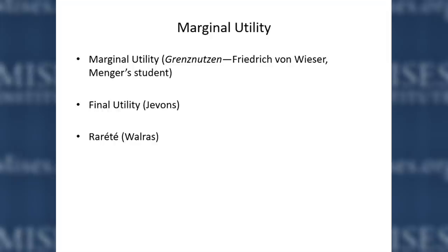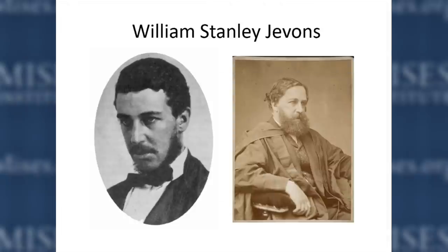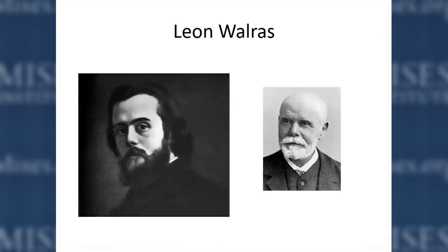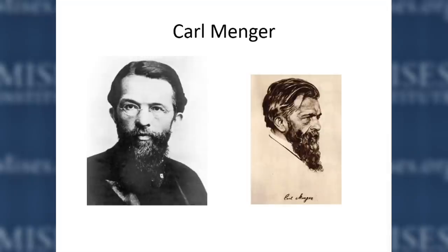Looking at the people involved: William Stanley Jevons — a dashing ladies' man when he's younger, but gets older and is like a weird old guy sitting on a bench feeding pigeons in the park. Leon Walras, kind of dark and mysterious when he's younger, gets older, he's like your grandfather doddering around. But then you come to Menger — hip and handsome when he's younger, and very distinguished when he's older. That seems to be the pattern in Austrian economics.